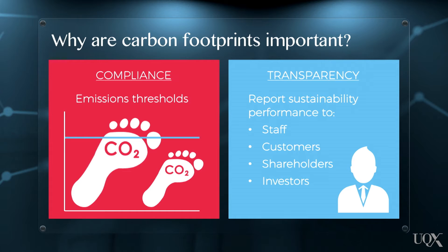But carbon footprinting is not just about compliance. In fact, in many industries such as finance and the resource sector, voluntary carbon footprinting is now largely expected. In both cases, organisations need to know how to undertake a carbon footprint according to best practice standards, for example the Greenhouse Gas Protocol Corporate Accounting Standard and ISO 14064. This takes skill and knowledge to gather the appropriate data, apply emissions factors, categorise emissions by scopes, and report in a clear and consistent way. There are generally five steps in undertaking an organisational carbon footprint.